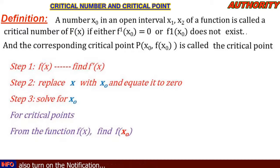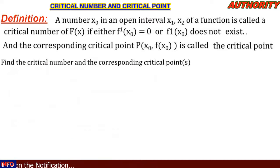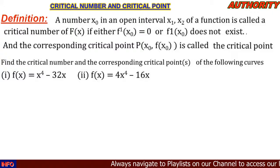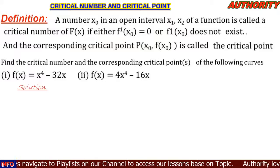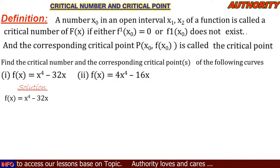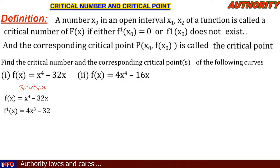Let's look at the examples. Number one: find the critical number and critical point of f(x) = x⁴ - 32x. For the solution, we differentiate: f prime of x is equal to 4x³ minus 32.